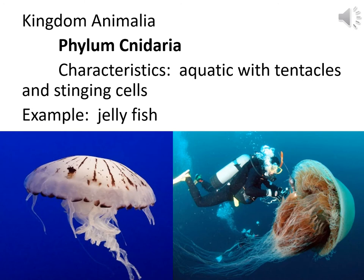Jellyfish are in Kingdom Animalia — ditto marks for the characteristics. Jellyfish are in Phylum Cnidaria — the C is silent. The characteristics of Phylum Cnidaria would be aquatic, with tentacles and stinging cells. Jellyfish, sea anemone, and corals would all be in Phylum Cnidaria.